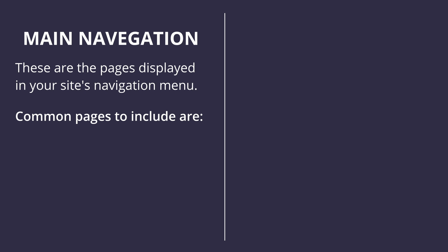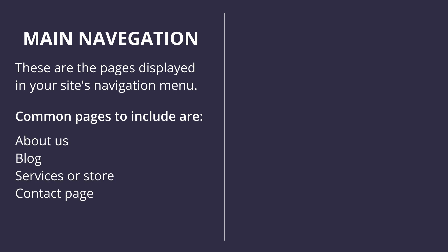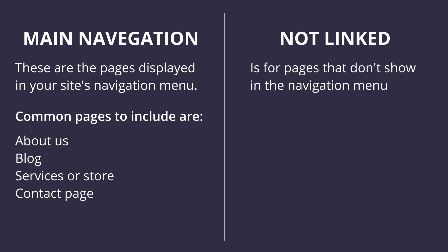Common pages to include are About Us, your Blog, Services or Store, and a Contact page. Not Linked is for pages that don't show up in the navigation menu. Imagine you have a business with 10 services — you have a Services page in the menu that briefly covers all services, but then you have a dedicated page for each one. Those would go in the Not Linked section.